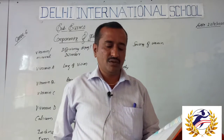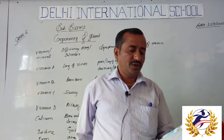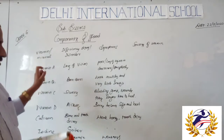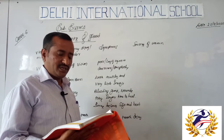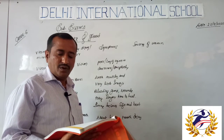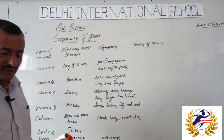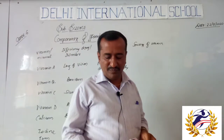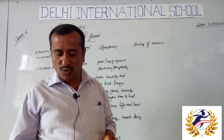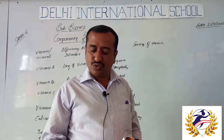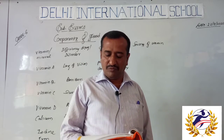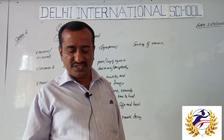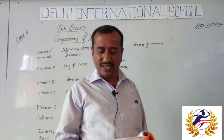Nutrients that are needed for maintenance of our body — proteins and vitamins. The vitamin required to maintain good eyesight is vitamin A. For healthy bones and teeth — calcium. Deficiency diseases can be prevented by eating a balanced diet. A balanced diet for the body should contain a variety of foods.